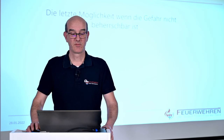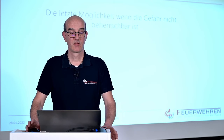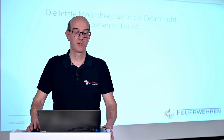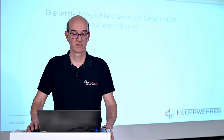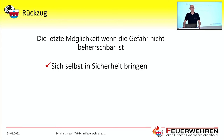Die letzte Möglichkeit, die wir einsatzmäßig haben: der Rückzug. Rückzug wählen wir immer dann, wenn wir eine Gefahr nicht oder zumindest momentan nicht beherrschen können. Wir wählen ihn, um uns selber in Sicherheit zu bringen. Rückzug ist auch durchaus ein Mittel, das der Trupp selber anwendet. Wenn der Trupp im Innenangriff sich einer Gefahr gegenübersieht, die er glaubt nicht beherrschen zu können, muss er selbstständig entscheiden, den Rückzug anzutreten. Das kann der Einsatzleiter draußen auf der Straße nicht entscheiden.